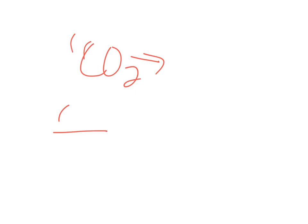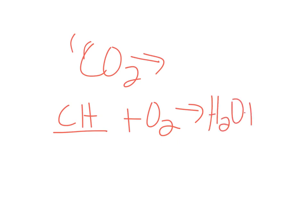When we burn a fuel — some kind of C and H compound — we add oxygen to it, and it produces water and CO2. That combustion process is what happens when hydrocarbons combine with oxygen. The next time you're driving, take a look at the tailpipe of the car in front of you. You'll notice water droplets coming out — that's the water being produced. You don't see the CO2, but it's there.